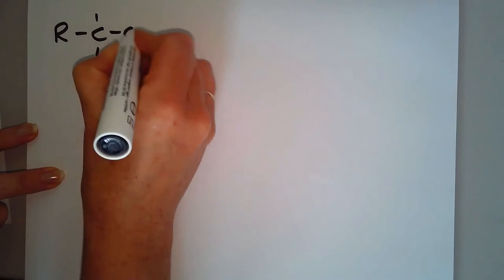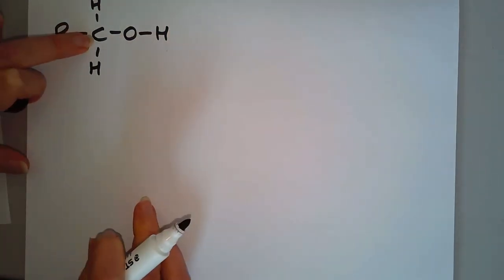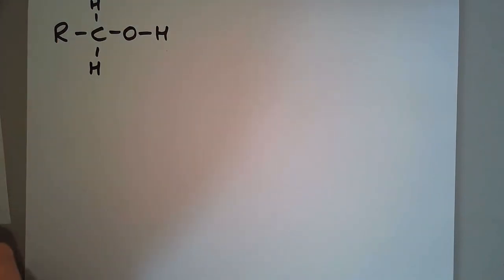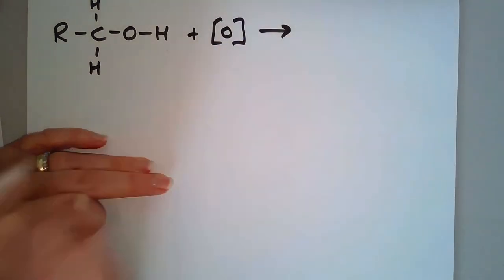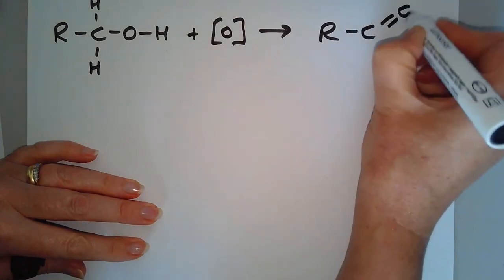The C that has the OH on is only attached to one other carbon, so it's primary. If we react that with our oxidizing agent, we're saying here that we can turn that into an aldehyde.